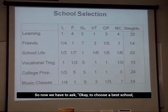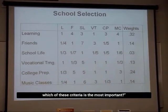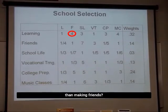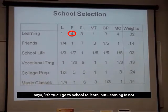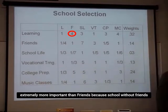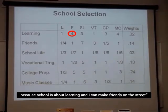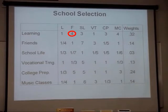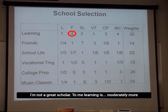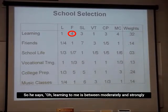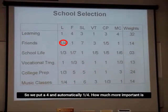Now we have to ask: to choose the best school, which of these criteria is the most important? Let's compare them. How much more important is learning than making friends? Michael said: it's true, I go to school to learn, but learning is not extremely more important than friends because school without friends is like hell. On the other hand, learning and friends are not equal because school is about learning — I can make friends on the street. Learning is moderately more important than friends, so we put a four, and automatically one-fourth as the reciprocal.